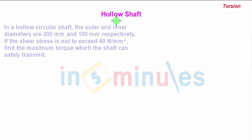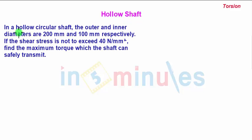Welcome to in 5 minutes. We take a problem on torsion and hollow shaft. Our problem statement is: in a hollow circular shaft, the outer and inner diameters are 200 mm and 100 mm respectively. If the shear stress is not to exceed 40 Newton per mm square, find the maximum torque which the shaft can safely transmit.